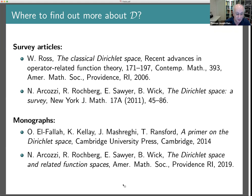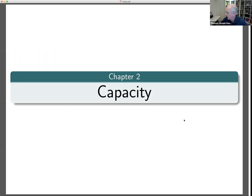Any questions before I move on? Before diving into the Dirichlet space itself, I need to discuss briefly the notion of capacity, because this will feature in many of the results. I can't give a detailed introduction, but at least I can give the basic definitions so that what I'm saying has some logical sense.